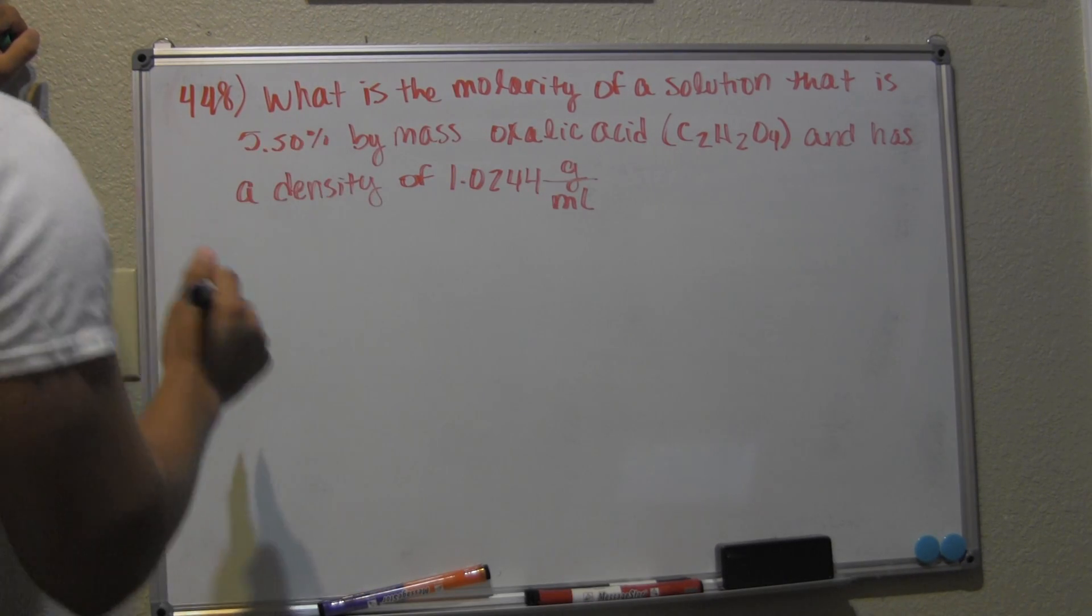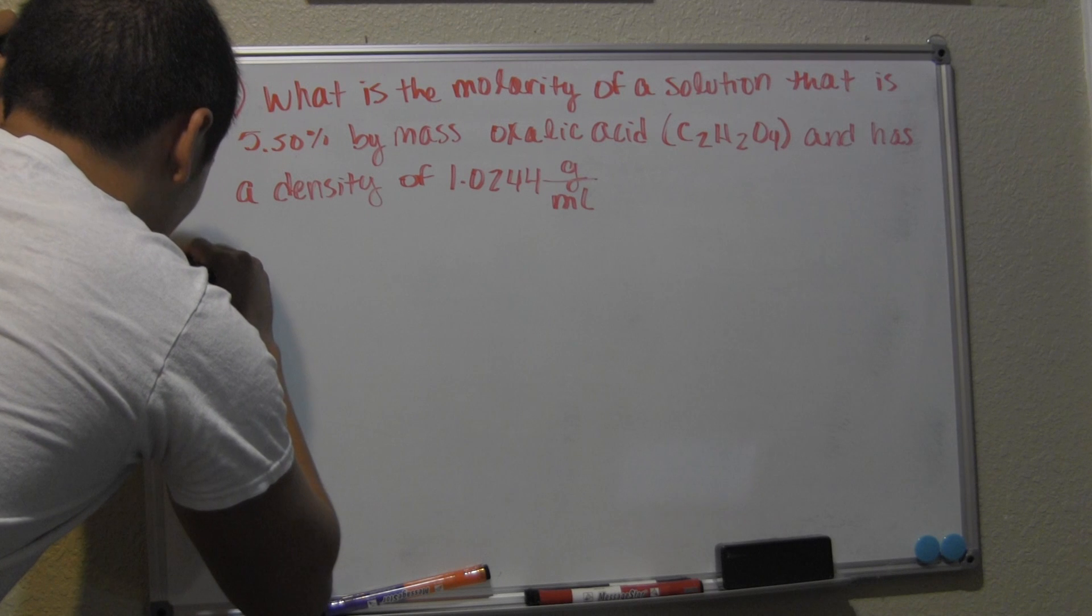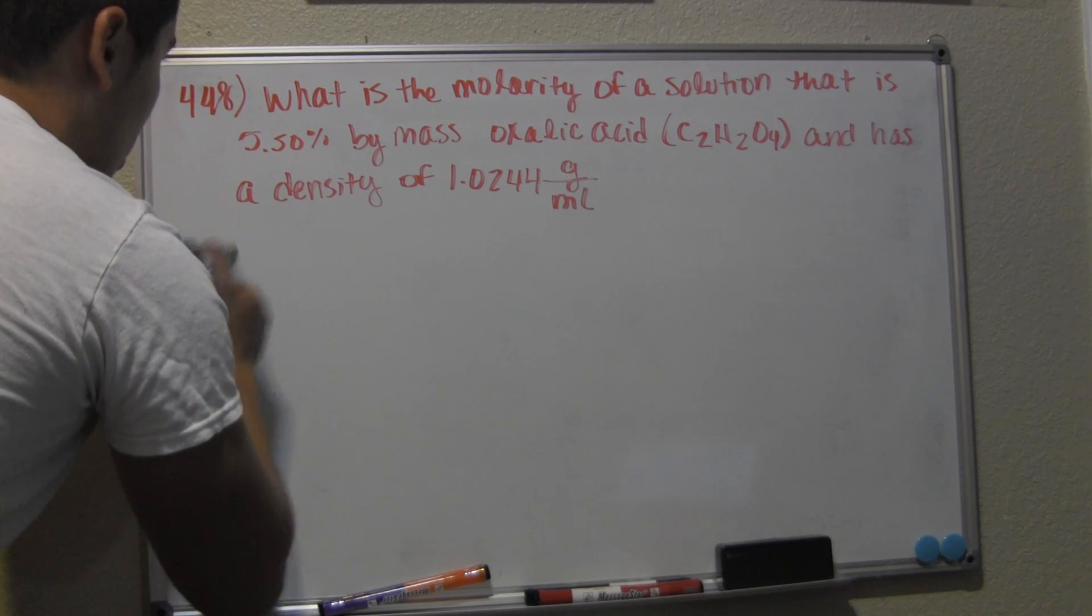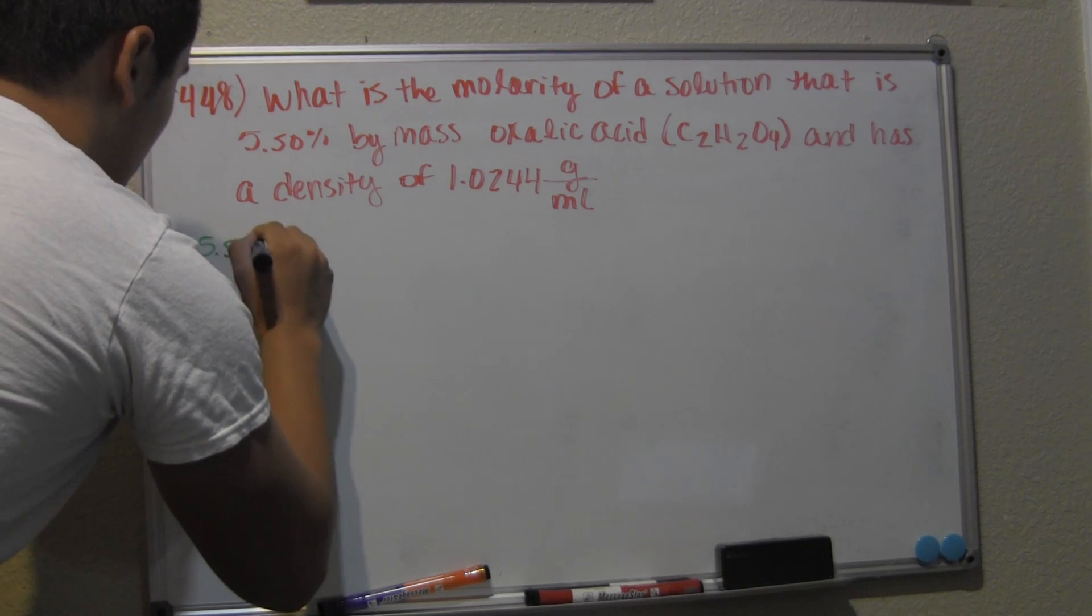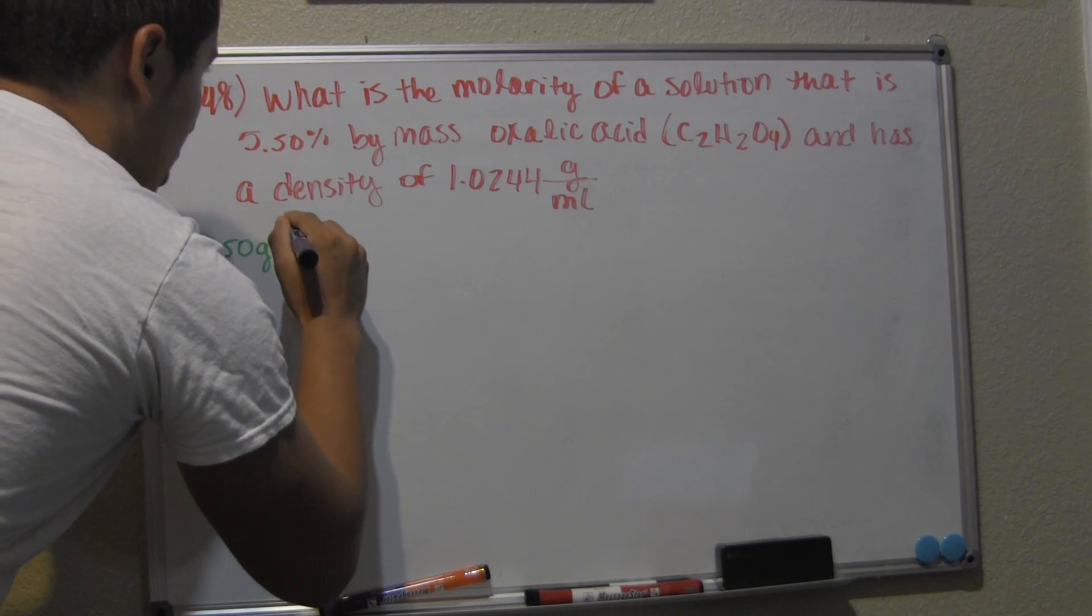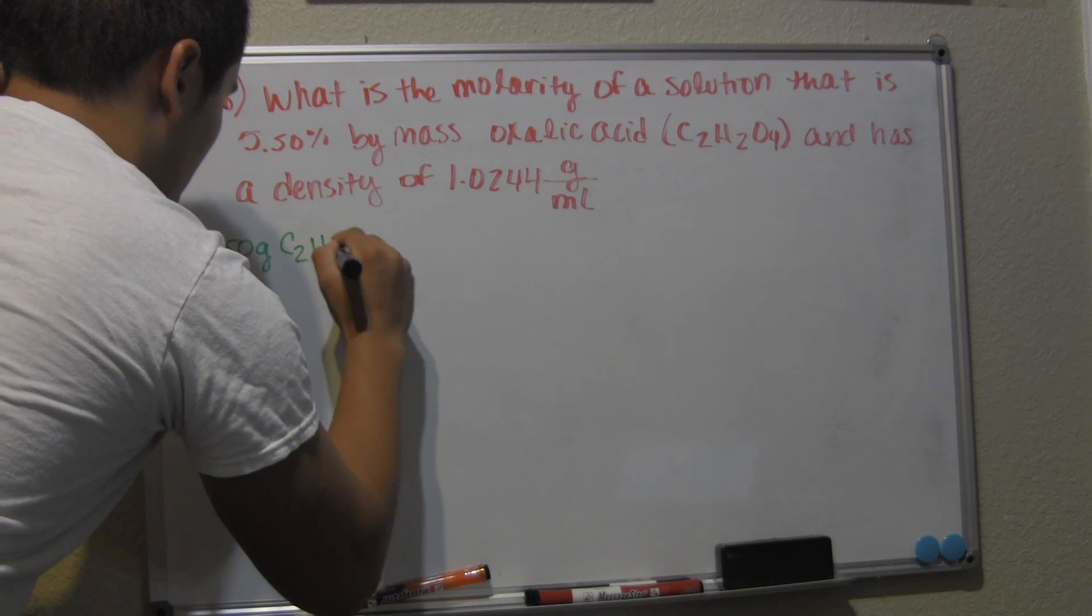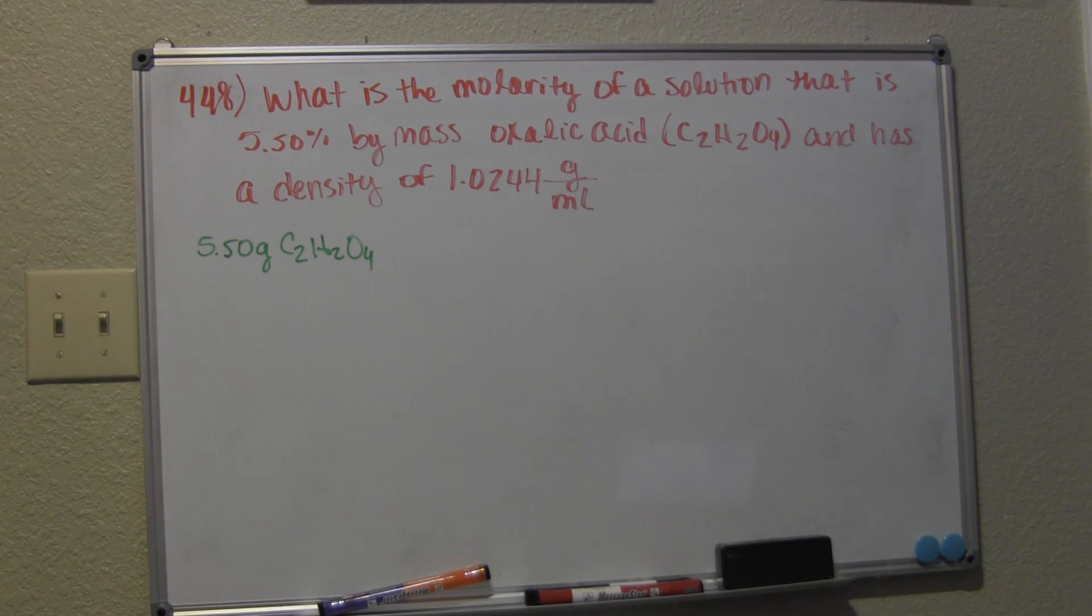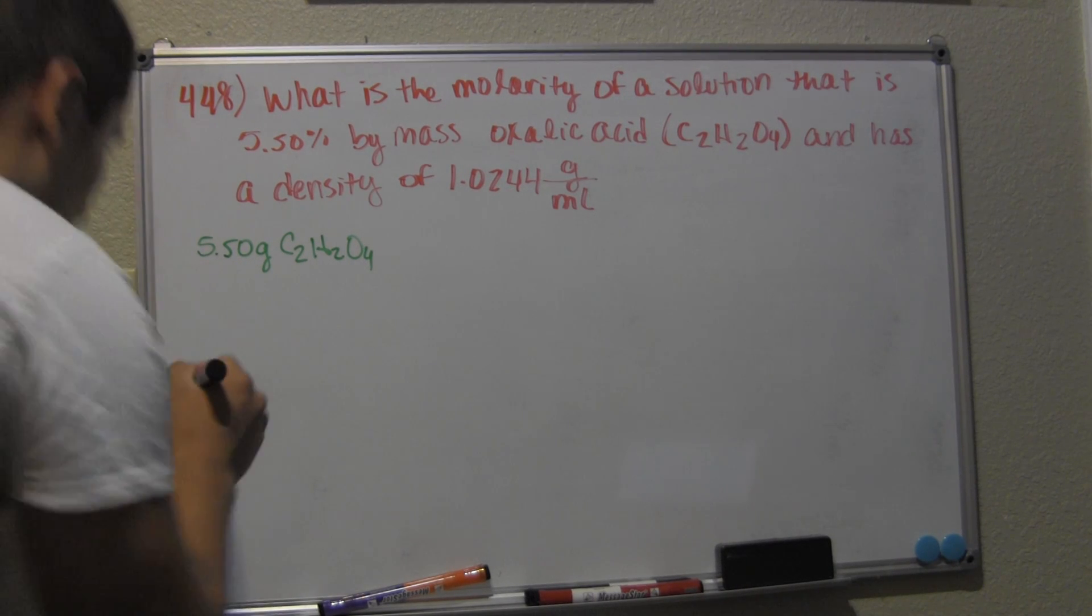So we have 100 grams total, which means that we have 5.50 grams of C₂H₂O₄, and we're going to be assuming that we have 94.5 grams of solvent.